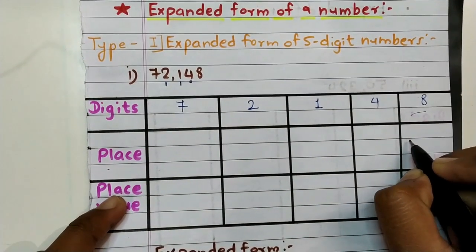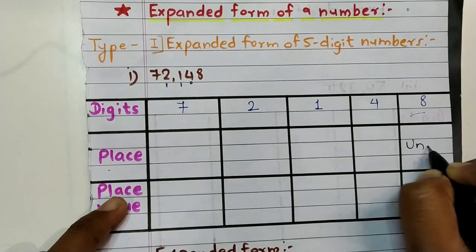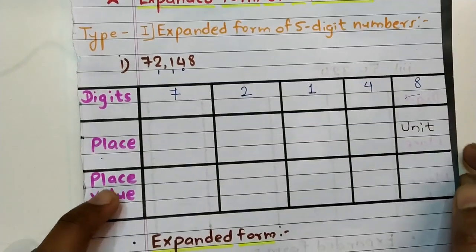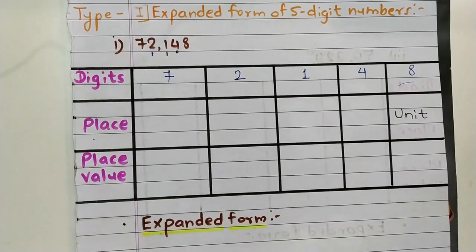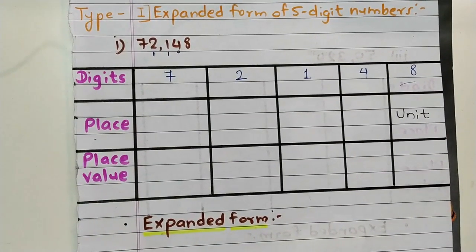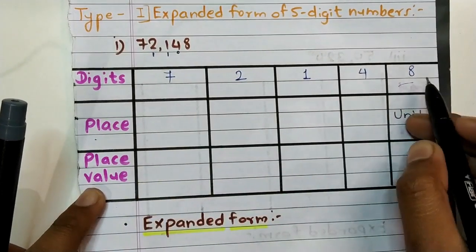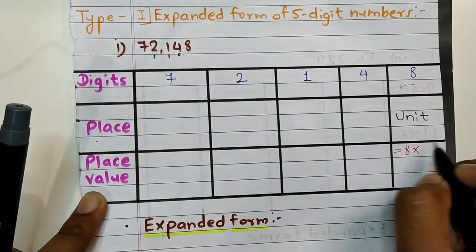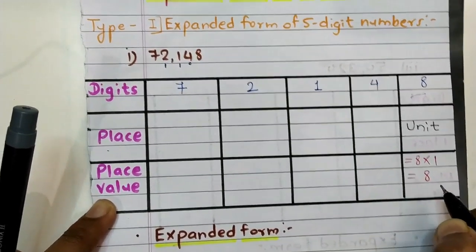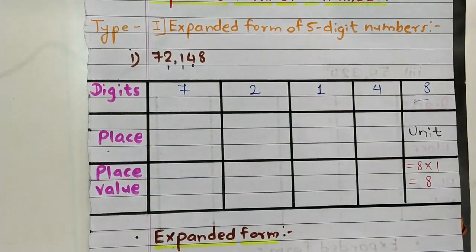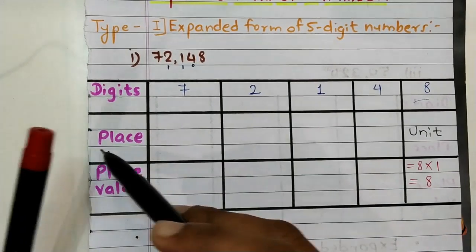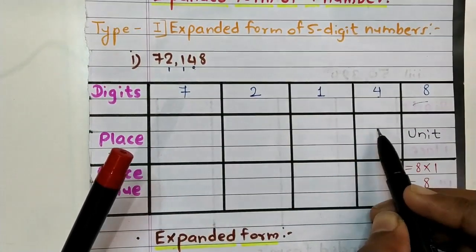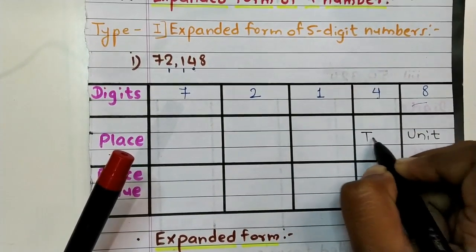Place of last digit eight is unit place, so here we write unit. Place value of eight equals eight into one, which is equal to eight. Next, place of four — here four is at tens place, so here we write ten.